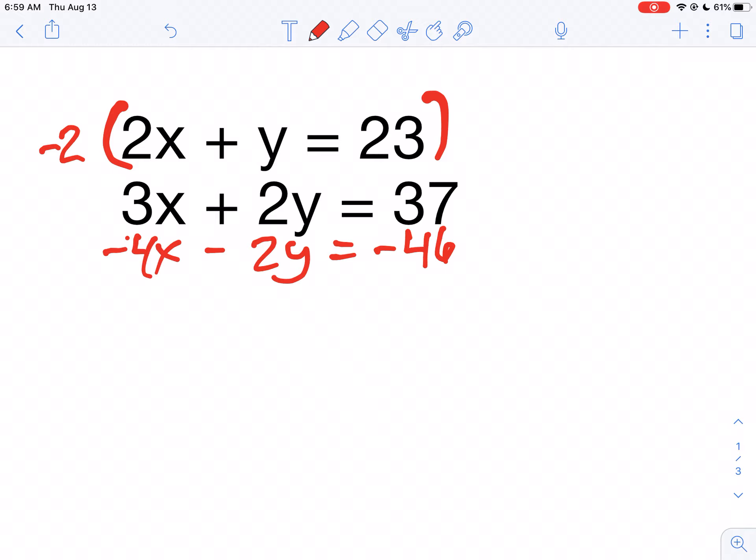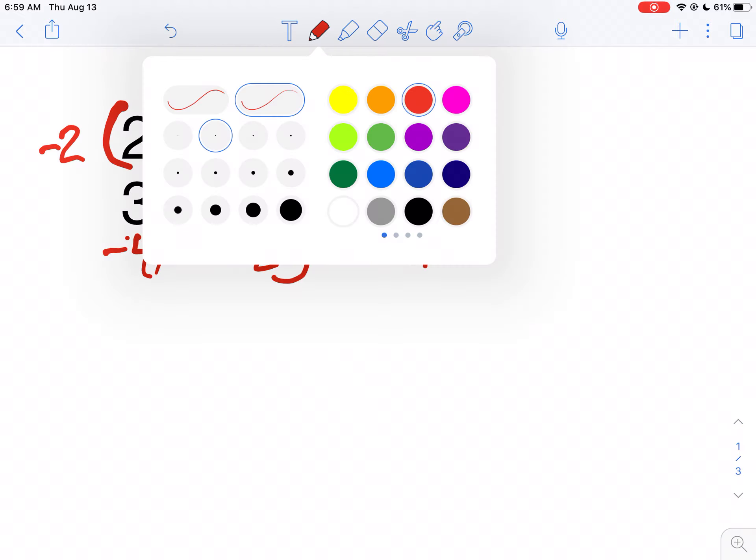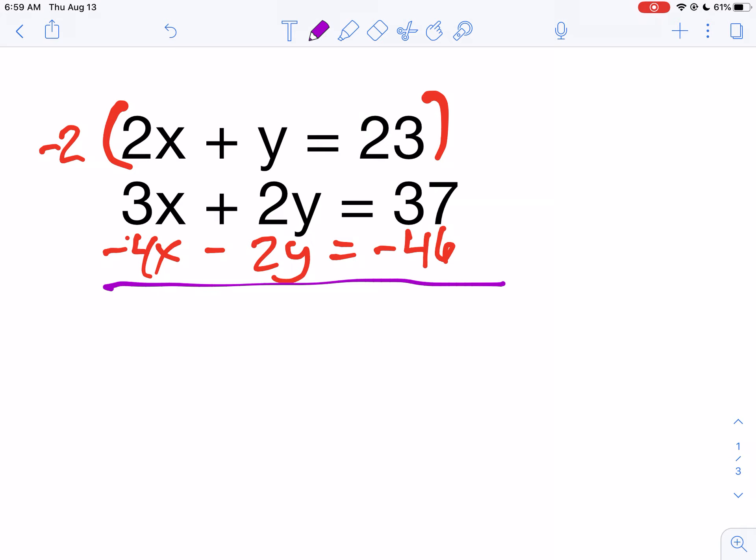Now notice my y's are opposite. So I'm going to draw my line and I'm going to add my two equations. 3x minus 4x is negative x. The y's cancel. So 37 minus 46 is negative 9.